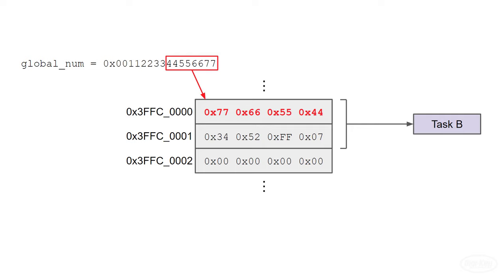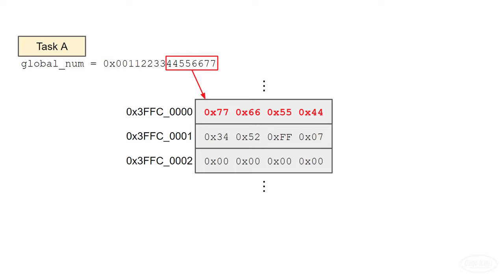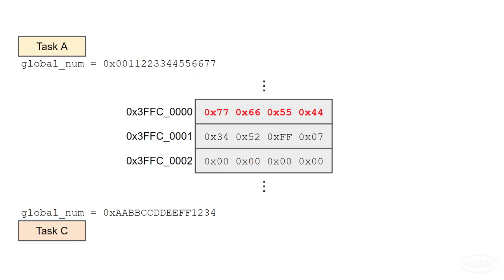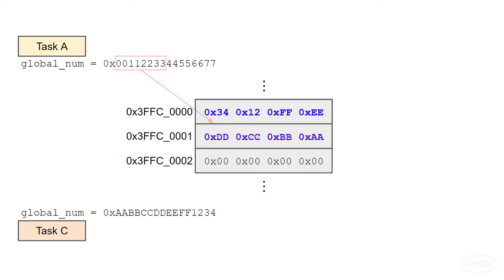Here's another possible scenario. Let's say task A begins writing a piece of data to memory. This can be a multiple-word value, like in the previous example, or several variables that are supposed to be together, like a struct. During that writing process, task C preempts task A and writes its own values to the same global variable or struct, overwriting all of the data. When it's done, task A picks up where it left off, writing the rest of the data. This creates another problem, as the data no longer reflects what either task A or task C intended.